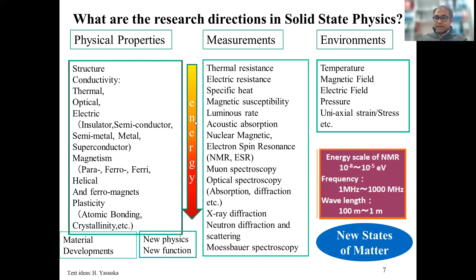So you have the physical properties, and to understand those physical properties you do measurements. The third part is the environment. When you have a sample, you try to understand its properties by varying the environment: you change the temperature, the magnetic field, the electric field, and the pressure. Pressure can nowadays be both uniaxial strain and stress, etc.